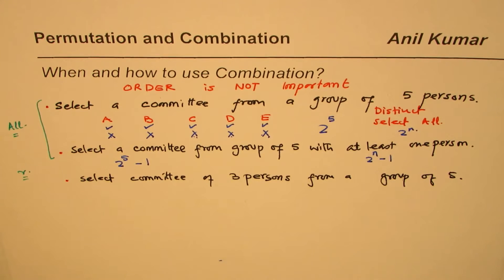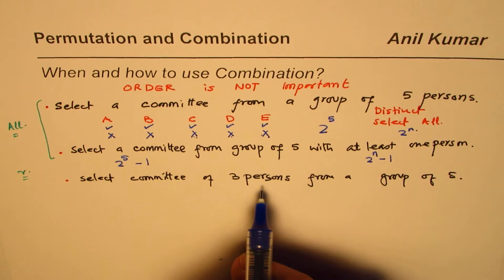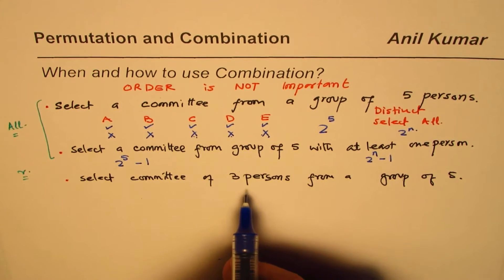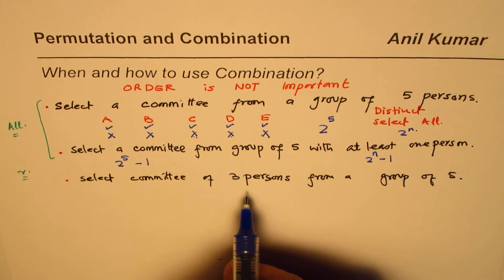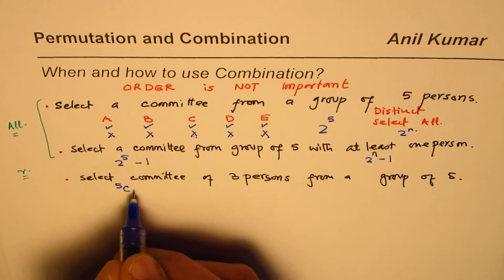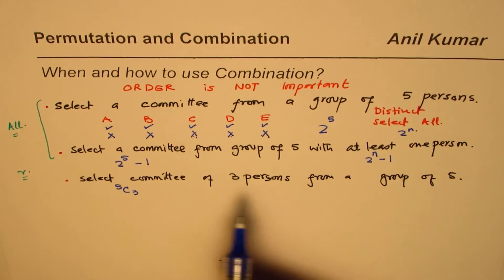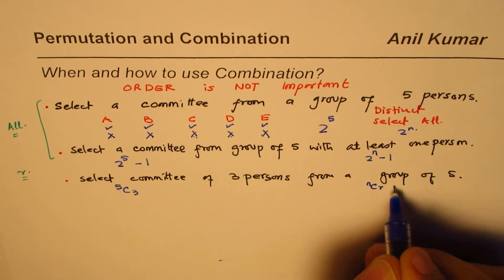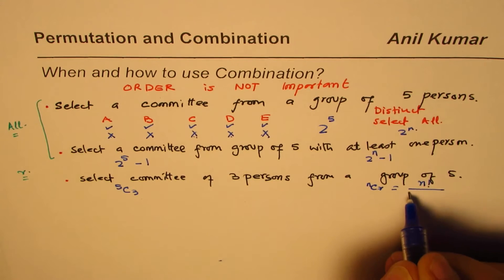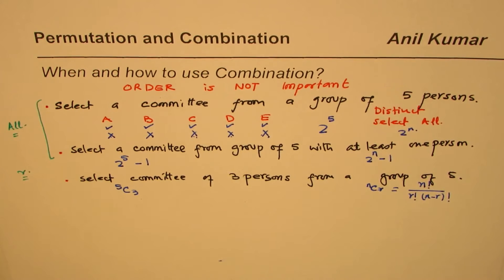In such cases it's a combination problem because the order in which you select the three persons doesn't matter — once three persons are selected, the order may change but they remain the same three persons. So we choose 3 from 5, written as 5C3. In general the answer is nCr, where nCr = n! / (r! × (n − r)!).